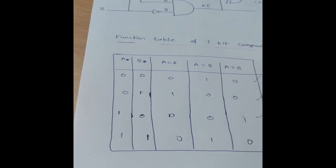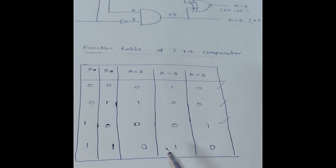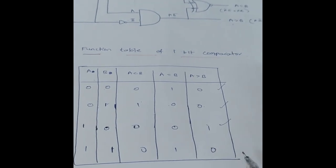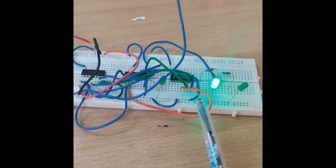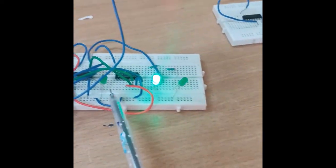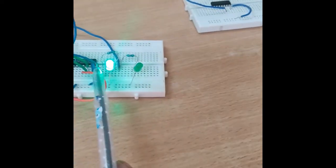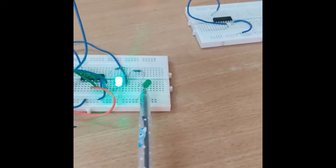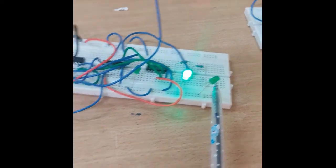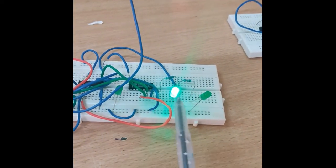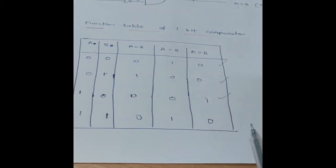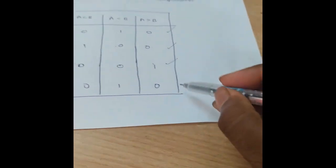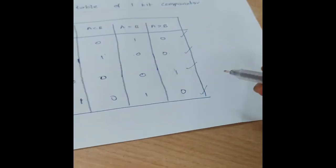Last combination — inputs are one one. A equal to B is one and the remaining are zero. So A less than B is zero, A equal to B is one, and A greater than B is zero — output is zero one zero. The last combination is also verified. Thank you.